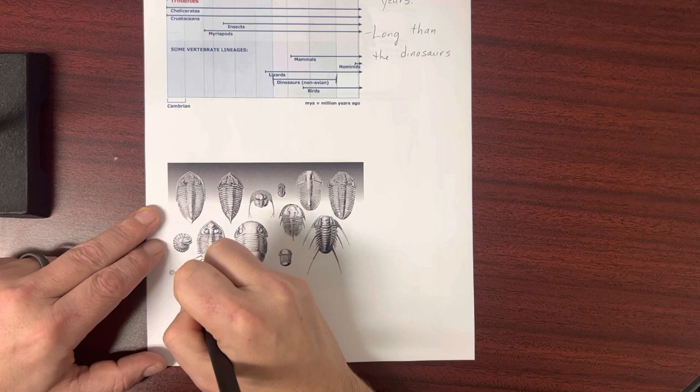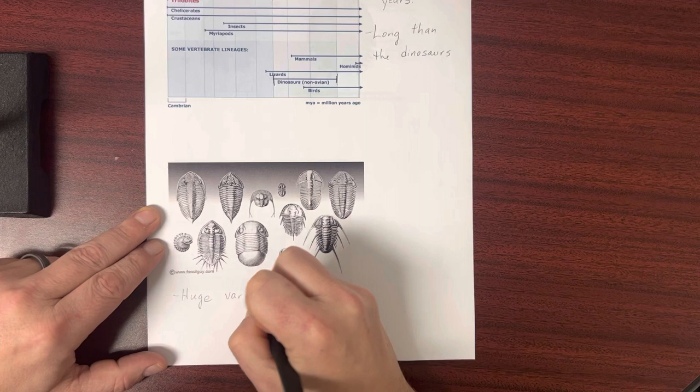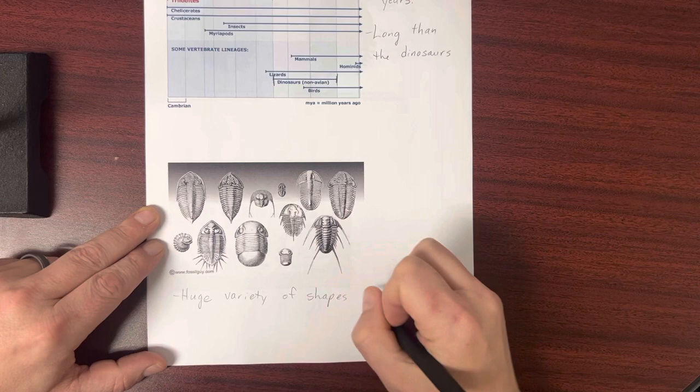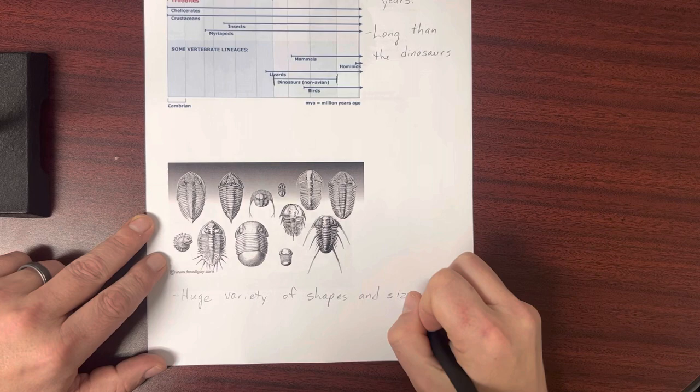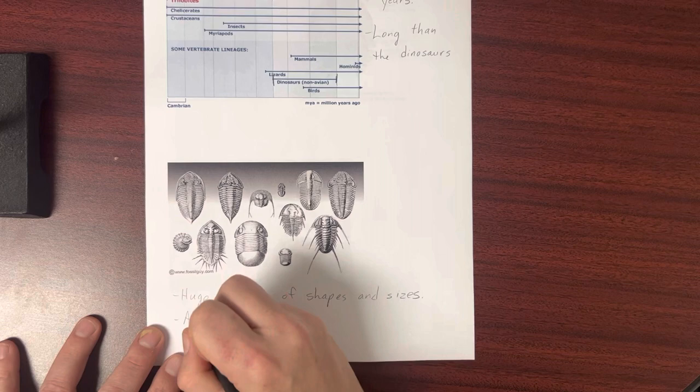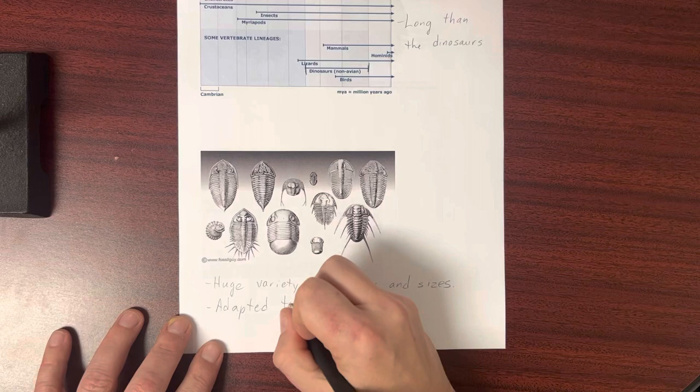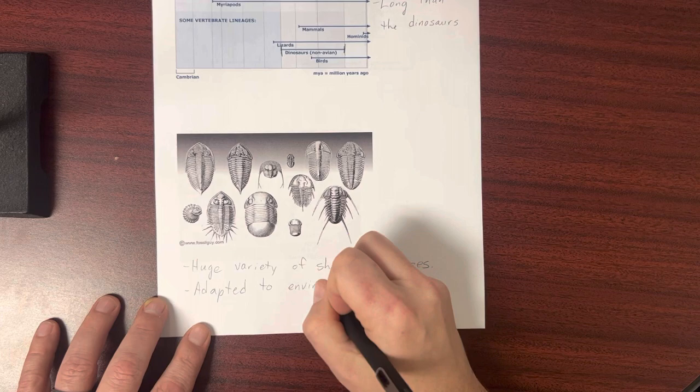Down here we have a drawing. And that drawing shows a huge variety of shapes and sizes. And this is just a fraction of the different types of trilobites that there were. They were adapted to their environment, as you would expect of anything that lived for that long. It's going to adapt to conditions in the environment, but it's also going to adapt to creatures in the environment.